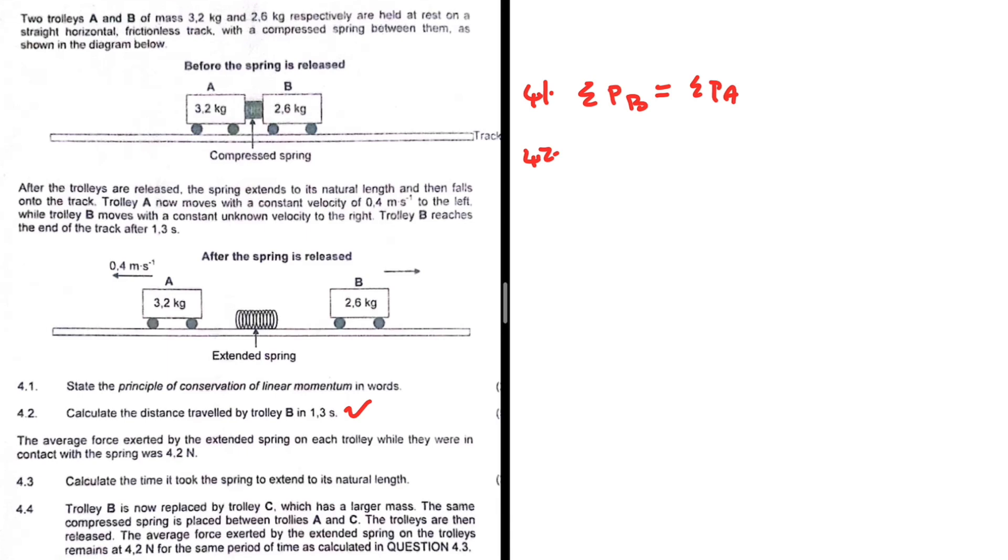Let's take a look at our question statement and see what is going on. So two trolleys A and B of mass 3.2 kg and 2.6 kg respectively are held at rest on a straight horizontal frictionless track with a compressed spring between them, as shown in the diagram below. So here in front of us, before the spring is released.